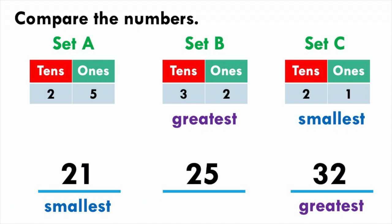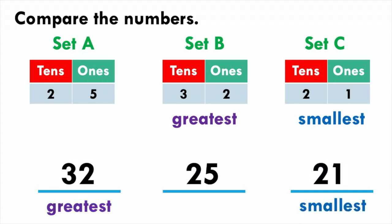I can also easily compare and order from greatest to smallest: 32 is the greatest, then 25, then 21. So this is how you compare and order numbers.